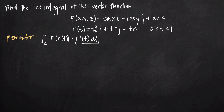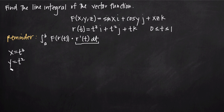We look at the vector function r(t) and use it to find equations for x, y, and z in terms of t. We take the coefficients on i, j, and k and set those equal to x, y, and z respectively. So we get x = t³ (the coefficient on i), y = t² (the coefficient on j), and z = t (the coefficient on k).